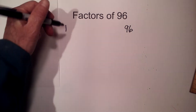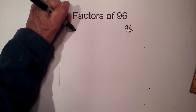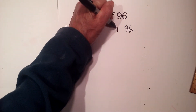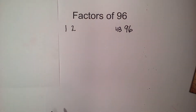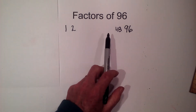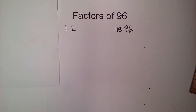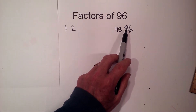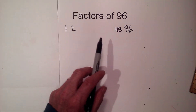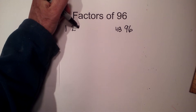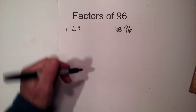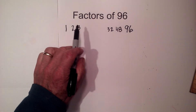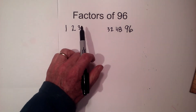First, will 2 go into 96? Yes, because it ends in an even number, so 2 times 48 equals 96. Next, does 3 divide into 96? Yes — if you add the digits of 96 together, that's 15, and 3 goes into 15. So 3 times 32 equals 96. Since 2 and 3 work, next is 4.